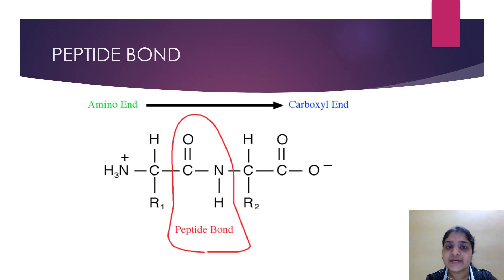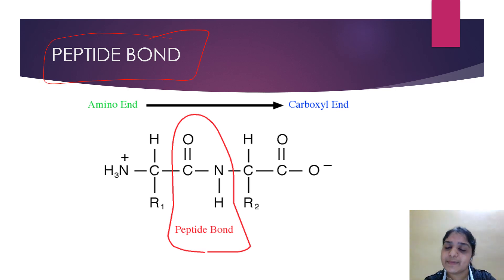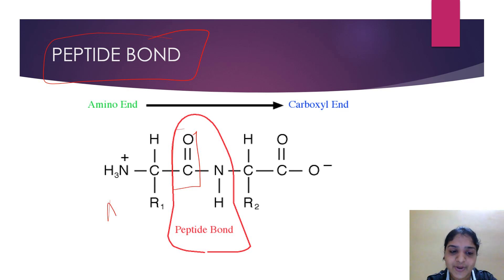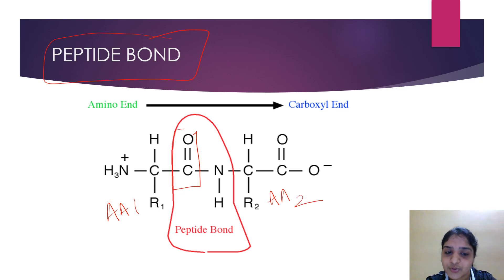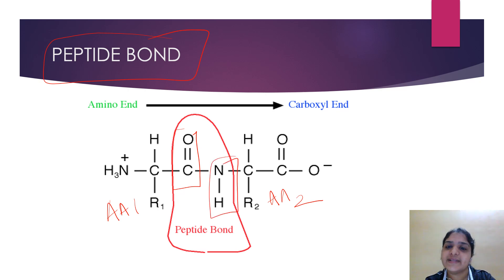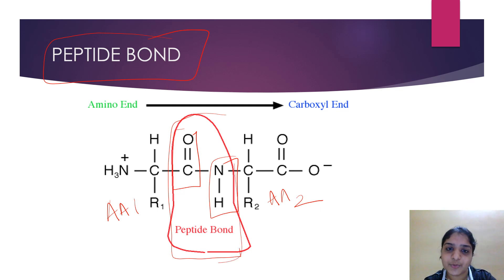All the amino acids in proteins are linked by peptide bonds. What is a peptide bond? The alpha carboxyl group of one amino acid, when it reacts with the alpha amino group of another amino acid, it forms a peptide bond.